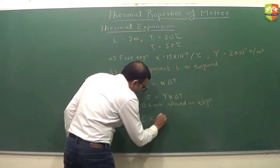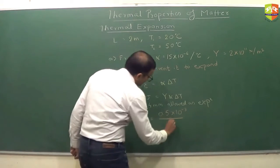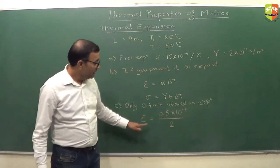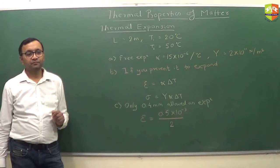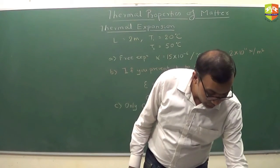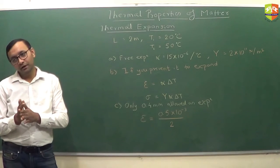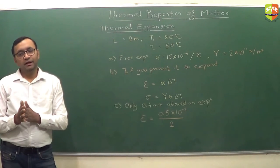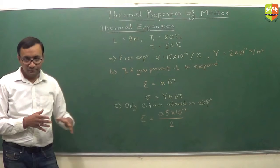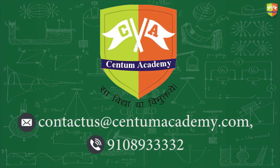So strain should be equal to what? 0.5 mm, which is 0.5 into 10 to the power minus 3 divided by 2 meters. This is strain. This into Young's modulus is the stress. Any doubts? So that's how we deal with the expansion property of the substances. Still there are some varieties of numericals that you have to do it as homework and ask me doubts in the next class. We will take next property after the break.